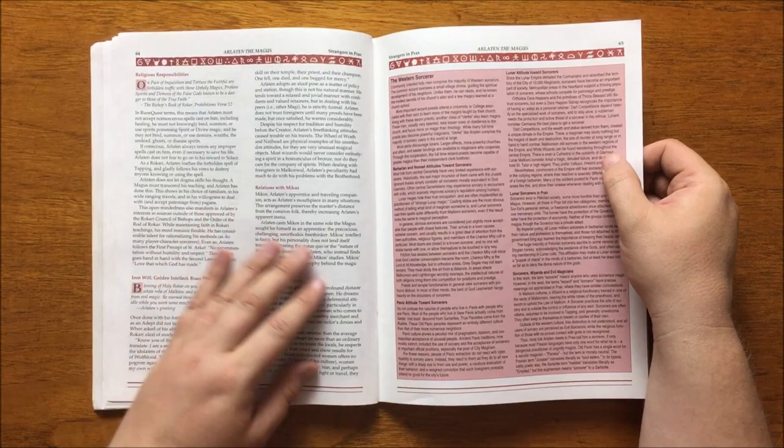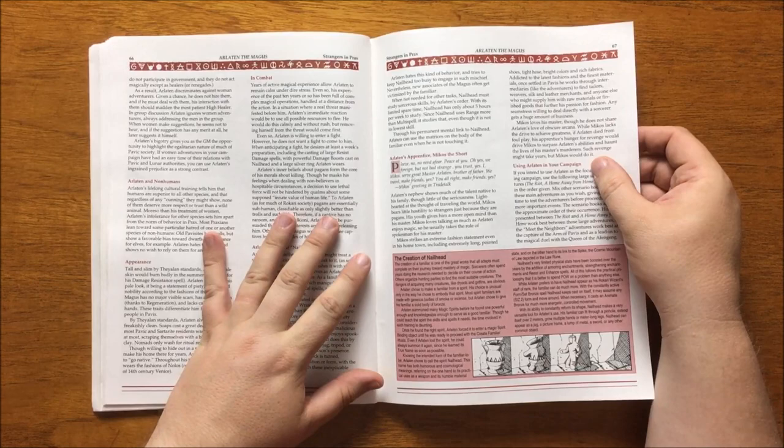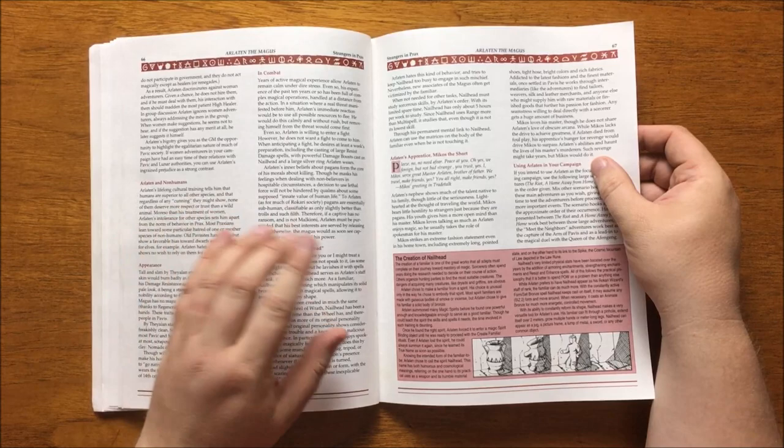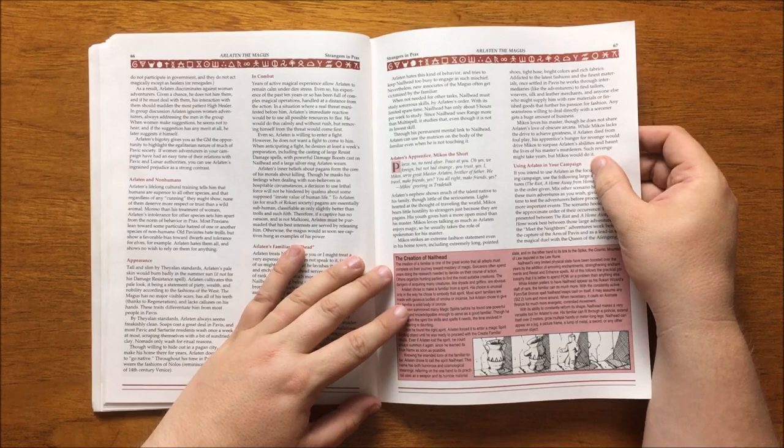After this, we have some information on the general attitude to sorcerers from the barbarians to the lunas, and their opinions vary from wanting to burn the witch to acceptance. It points out the difference that Malkione have in the use of the words wizard and sorcerer. Wizards have an almost religious function upholding the law of Malkion, whereas sorcerers practice the art without control or influence. It discusses Arlotton's distaste for non-humans and his appearance. Arlotton is tall and slim with very pale skin with no visible scars and all of his own teeth. He looks very different to the people of Pavus and seems to be freakishly clean.